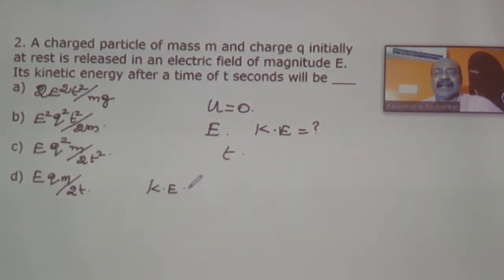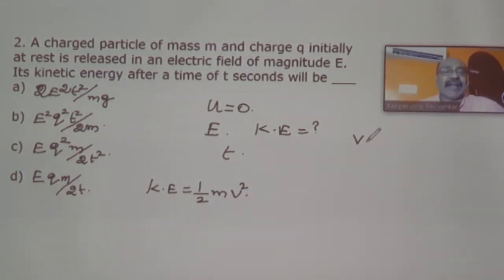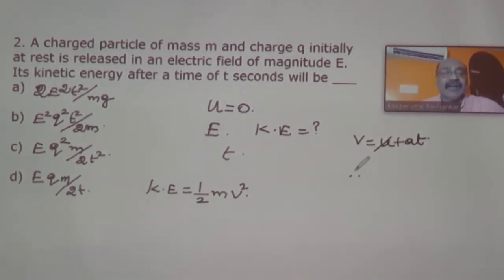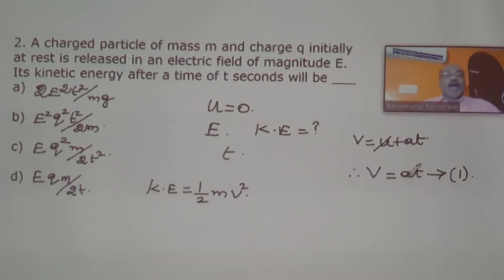To calculate kinetic energy, the formula is half into m into v squared. I have to find v. From the equations of motion, v equals u plus at. Since the particle is initially at rest, v equals a into t. Consider this as equation number one.